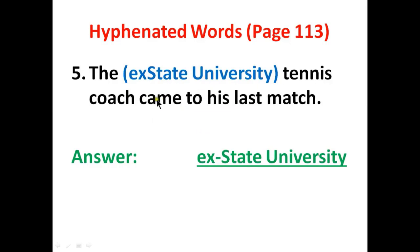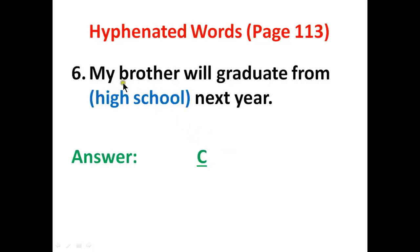Number five: The ex-State University tennis coach came to his last match. Between 'ex' and 'State' there will be a hyphen, and 'State' starts with a capital letter as it is a proper noun. Number six: My brother will graduate from high school next year — this is correct. 'High school' is a compound noun referring to the educational institution for grades 9 through 12. Write capital C on the line. There is no hyphen between 'high' and 'school'; there is a space between them.